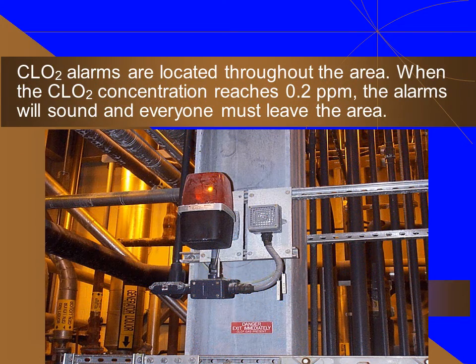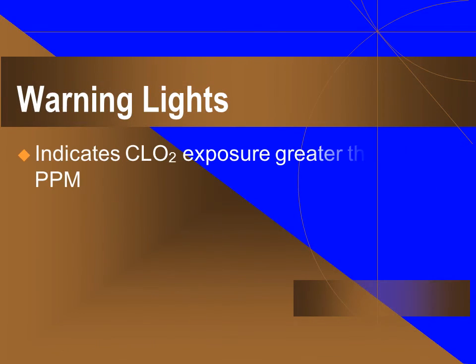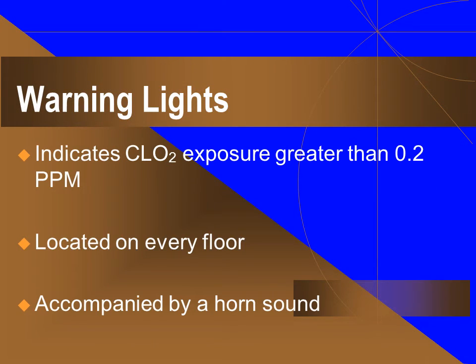Chlorine dioxide alarms are located throughout the area. When the chlorine dioxide concentration reaches 0.2 ppm, the alarms will sound and everyone must leave the area. Warning lights are installed as another indication of the presence of chlorine dioxide. The lights indicate chlorine dioxide exposure greater than 0.2 ppm. They are located on every floor and are accompanied by a horn sound.